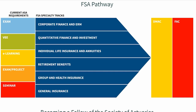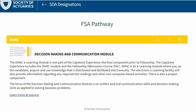Without going into all the details, in general for each fellowship track you'll need to write around three exams, three modules, and the FSA Fellowship Admissions Course (FAC). Exams range from two to five hours, except for the General Insurance track, which requires four exams. You also need to complete the DMAC — the Decision Making and Communication module — focused on written and oral communication skills and decision-making applied to business problems, helping to further develop your soft skills.